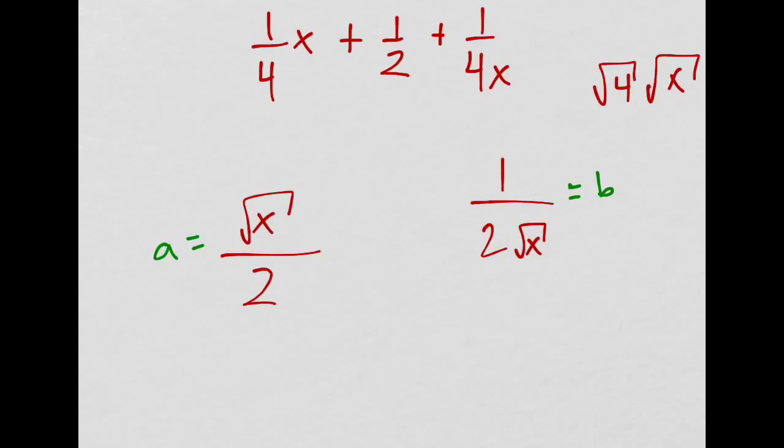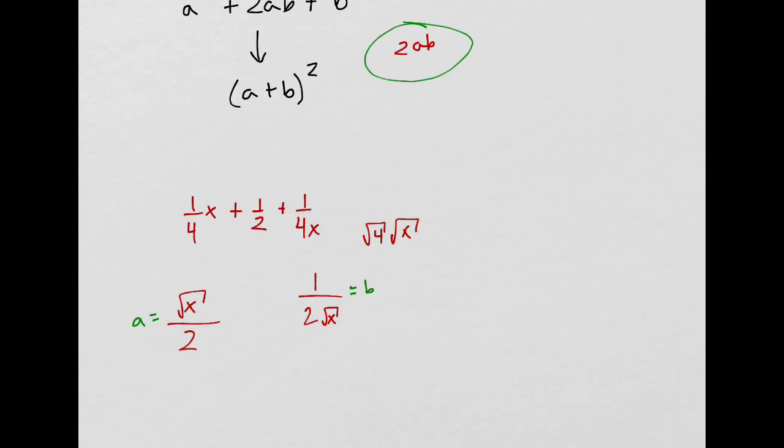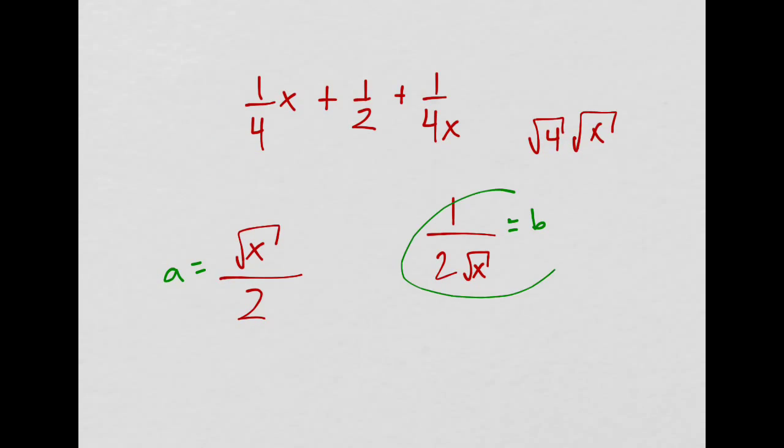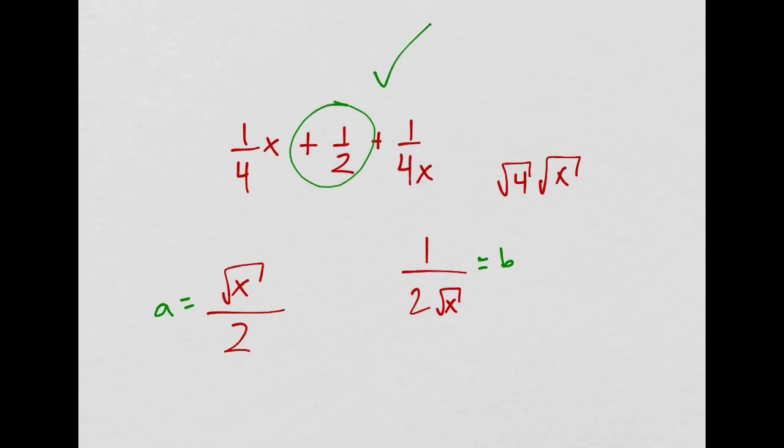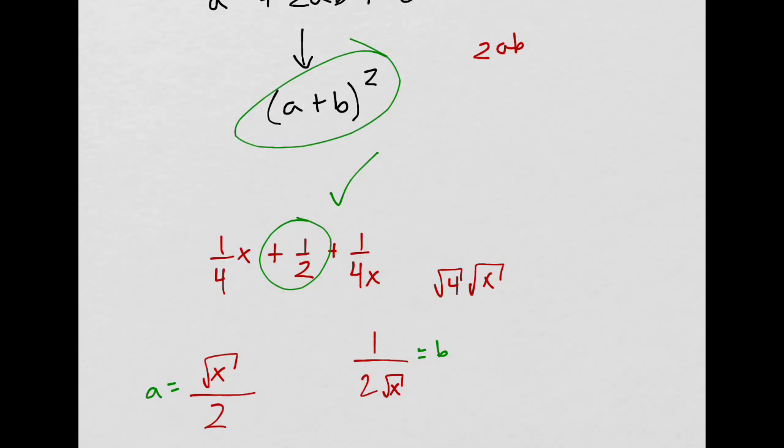If this works out, now what we do is we have to check 2ab. If we take b times a and also multiply it by 2 and we get the middle term, then we can automatically rewrite it like that. If we don't get the middle term, then it's not a perfect square trinomial.